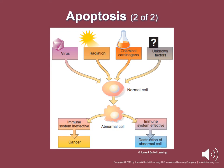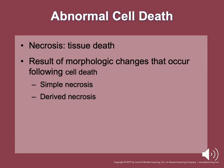Necrosis is tissue death resulting from changes that occur during cell death. Simple necrosis grows in microscopic tissue and some cells remain recognizable; it may be due to acute ischemia, toxicity, or direct physical injury. Derived necrosis includes caseous necrosis, dry gangrene, liquefactive necrosis, and fat necrosis.